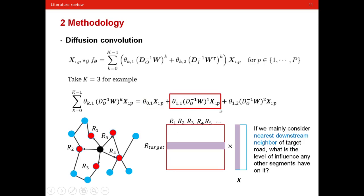And the second part, where k equals to 1, is saying that if we mainly consider the nearest downstream neighbor of the target road, what is the level of influence any other road segments will have on it. As you can see, if this is the target road segment that we want to predict traffic flow, and here is the downstream neighbors of this road segment. This part is used to characterize the level of this road segment on this target segment.